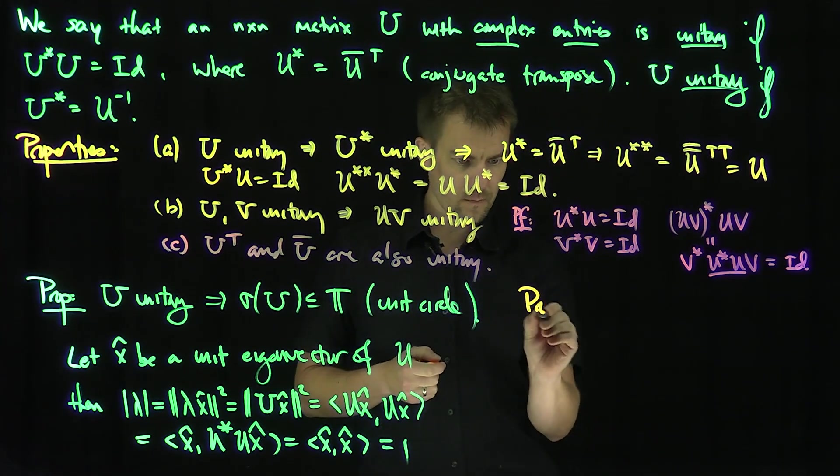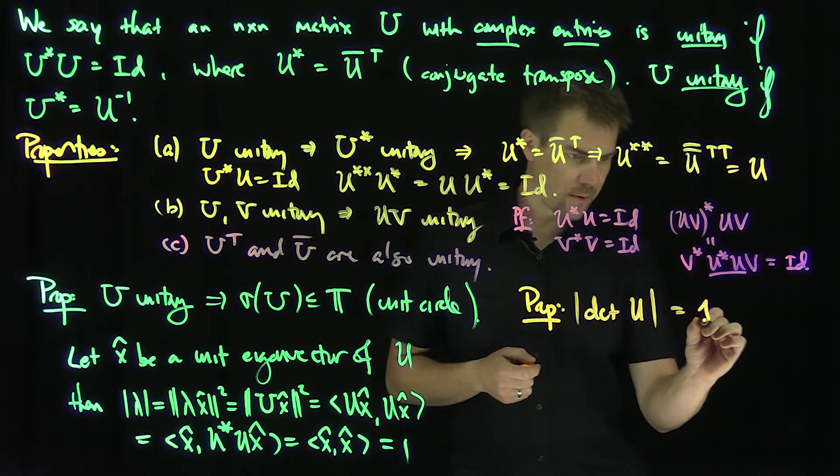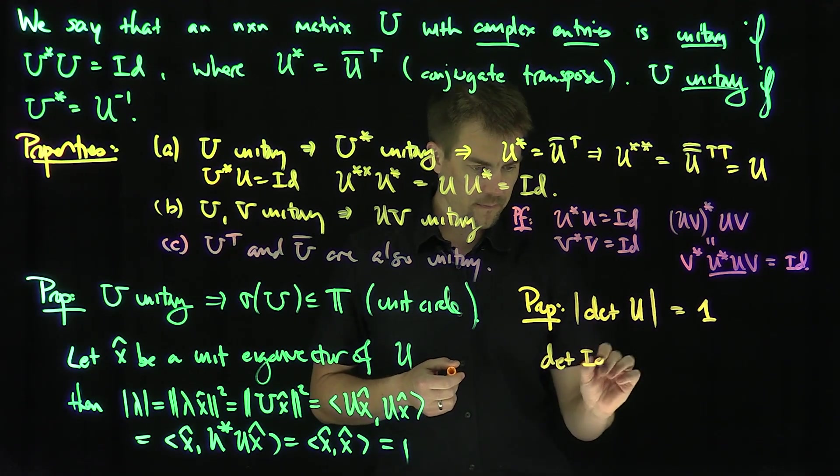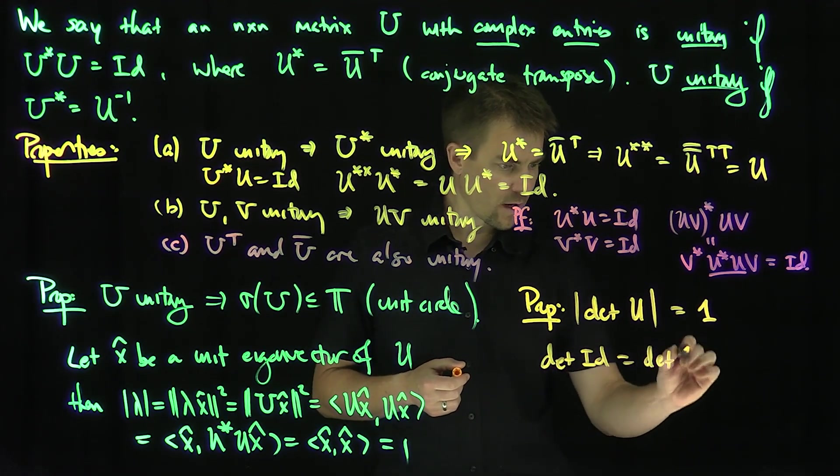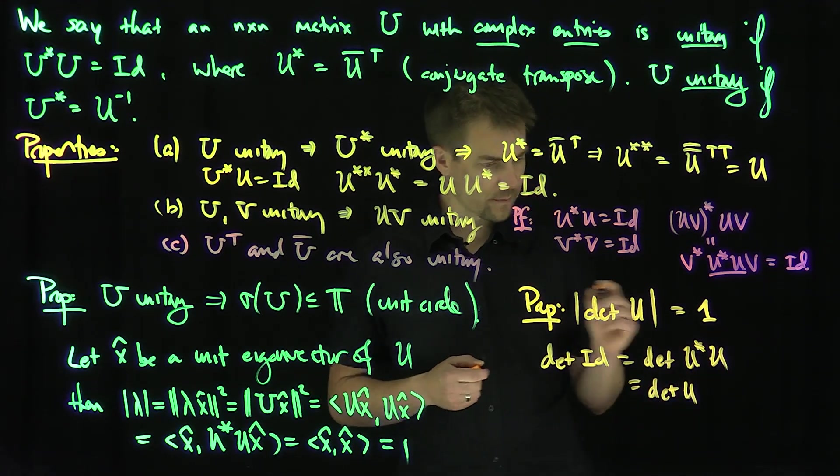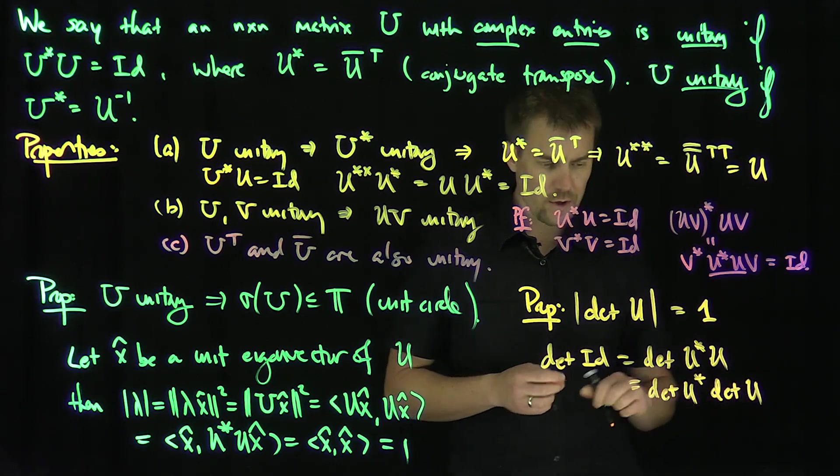Proposition: The determinant of the unitary matrix has absolute value equal to one. And that just stems from the fact that the determinants of the identity is the determinants of U star U, which is the determinant of U star times the determinant of U.